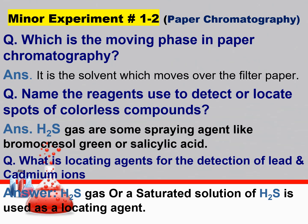More questions: which is the moving phase in paper chromatography? It is the solvent which moves over the filter paper. Another question: name the agent used to detect or locate spots of colorless compounds. Especially in this cobalt practical, H2S gas or some spraying agents like bromo-cresol green or salicylic acid are used. What is the locating agent for detecting lead and cadmium ions? A saturated solution of H2S is used as the locating agent.